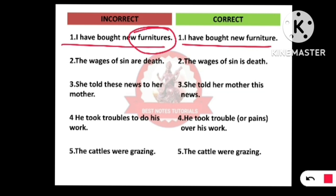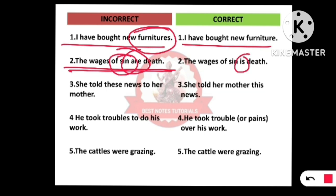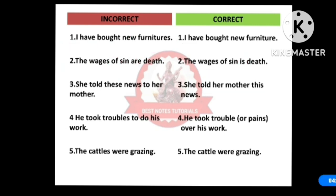Next: 'The wages of sin are death.' The word 'are' should not be there because we are talking about sin, and sin should be used with a singular verb. So the correct sentence is: 'The wages of sin is death' — not 'are,' but 'is.'